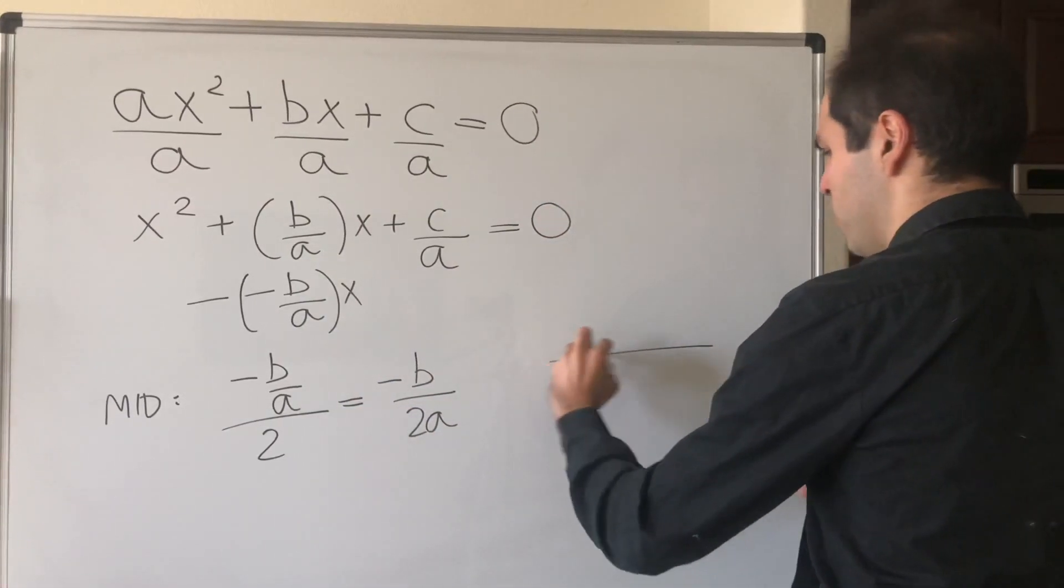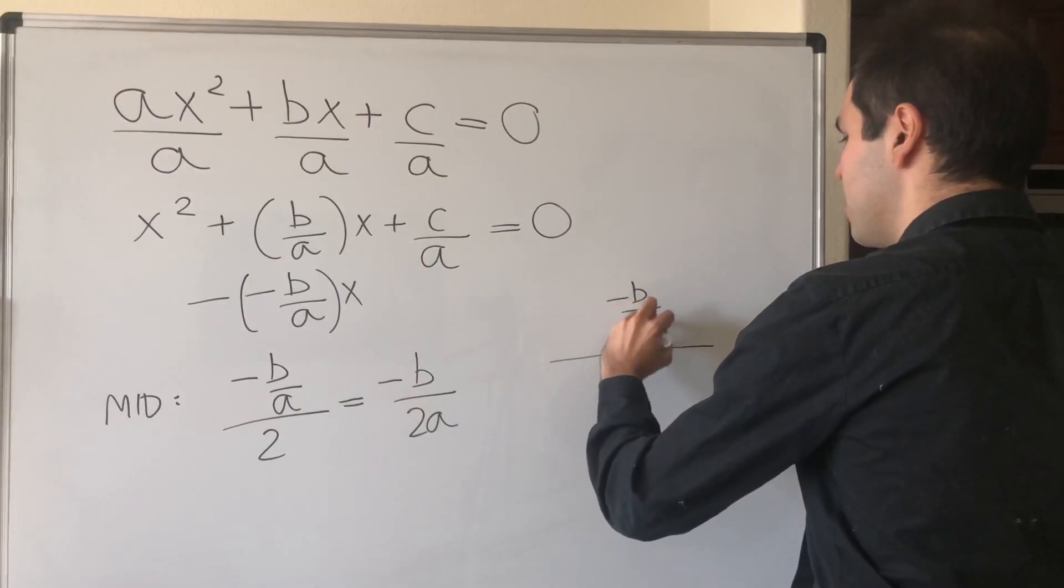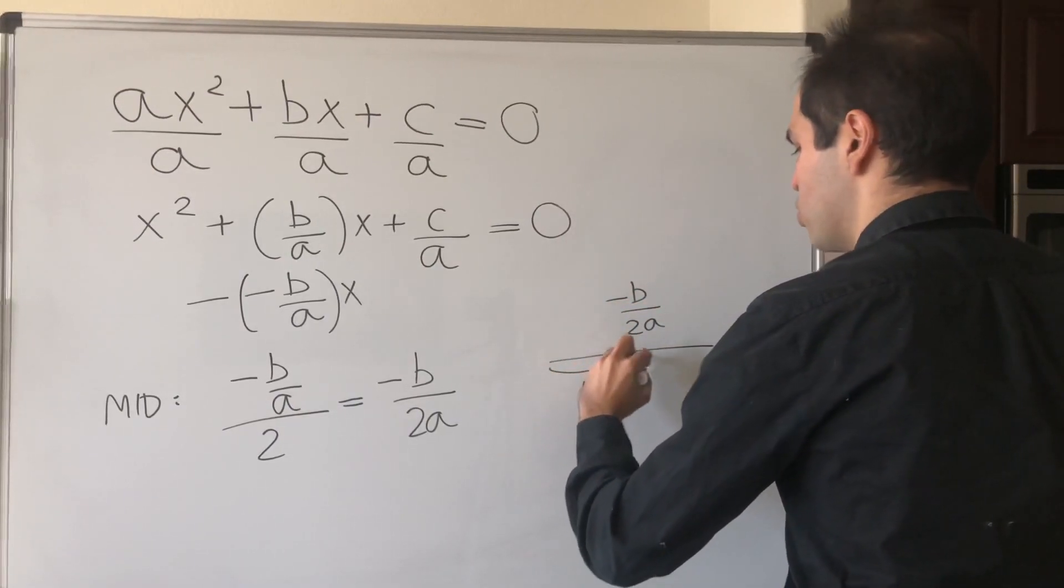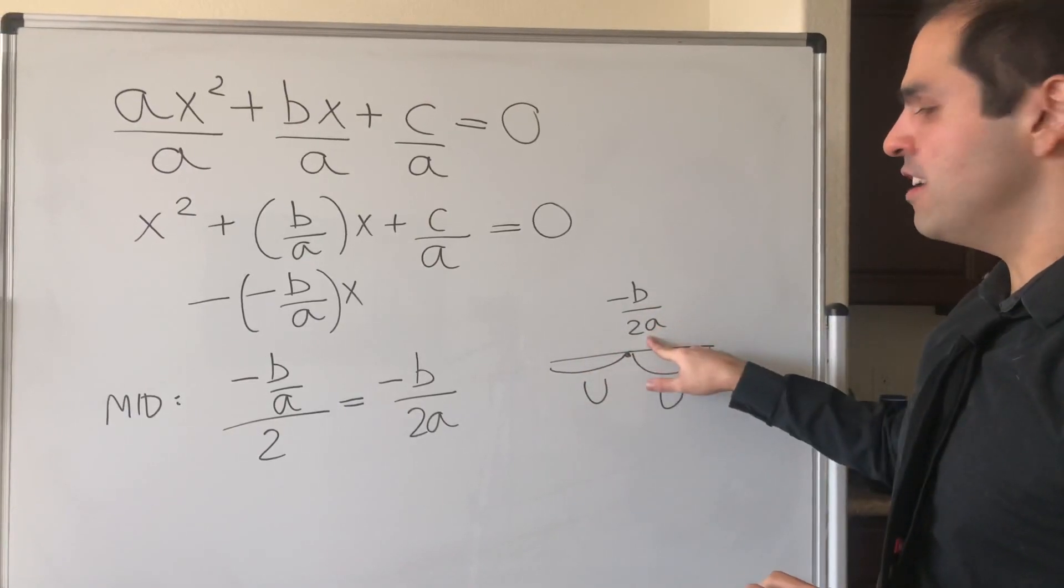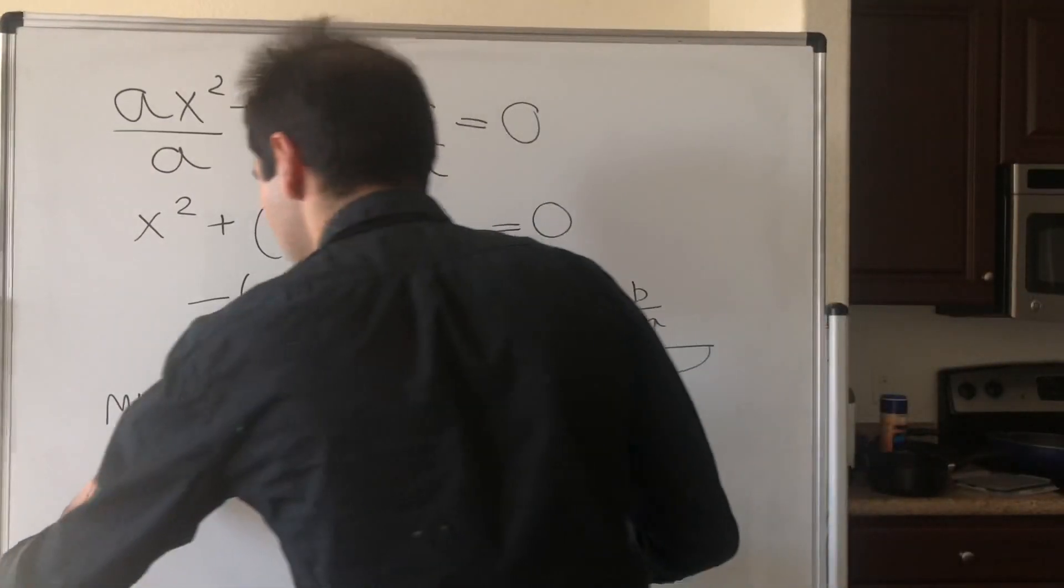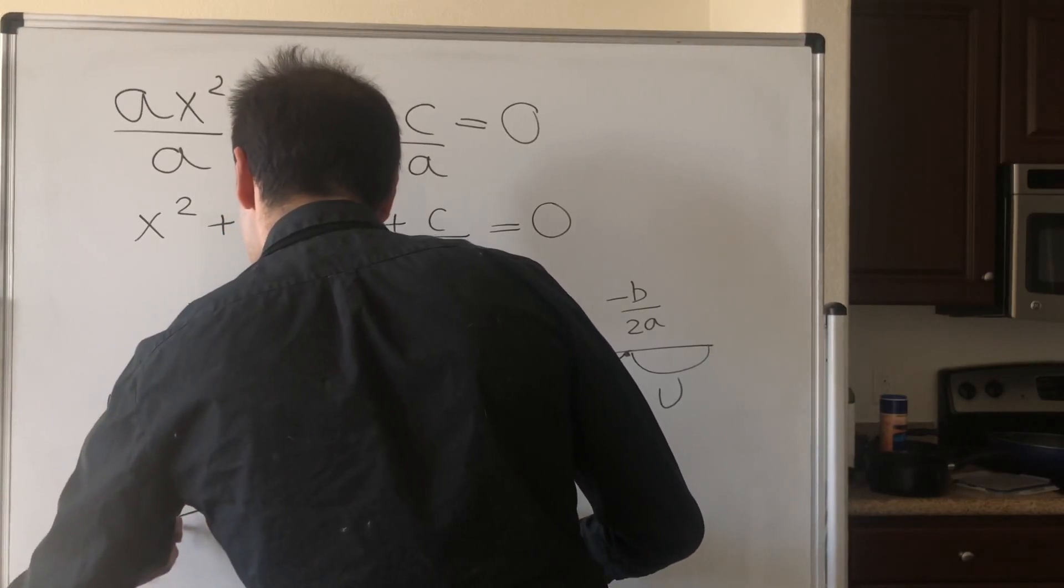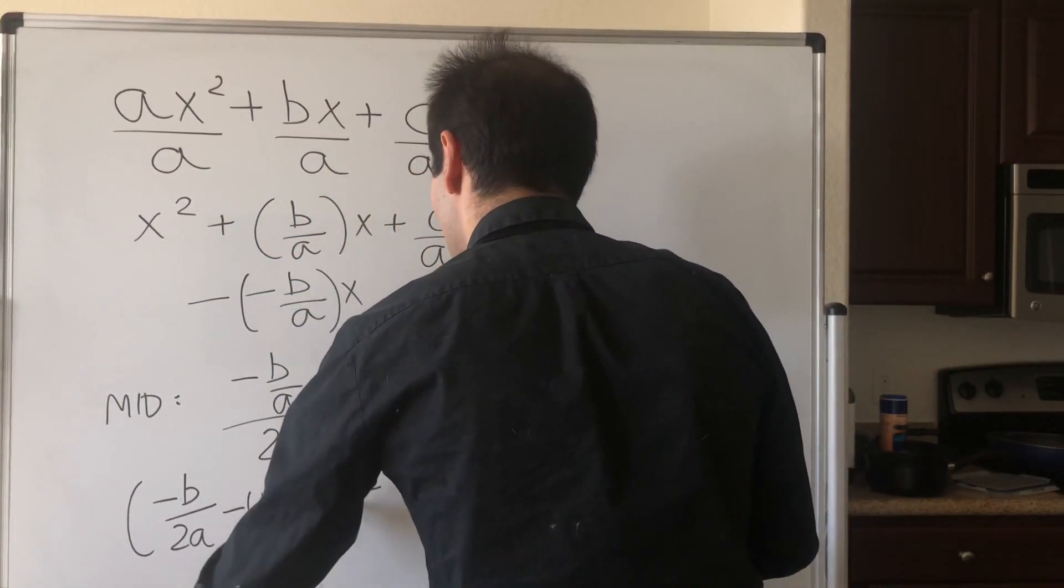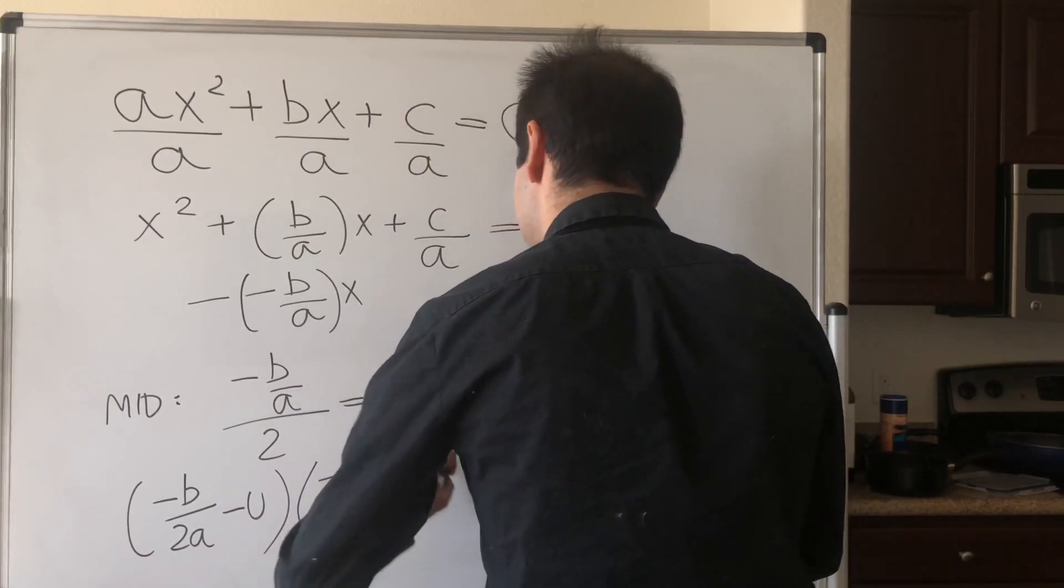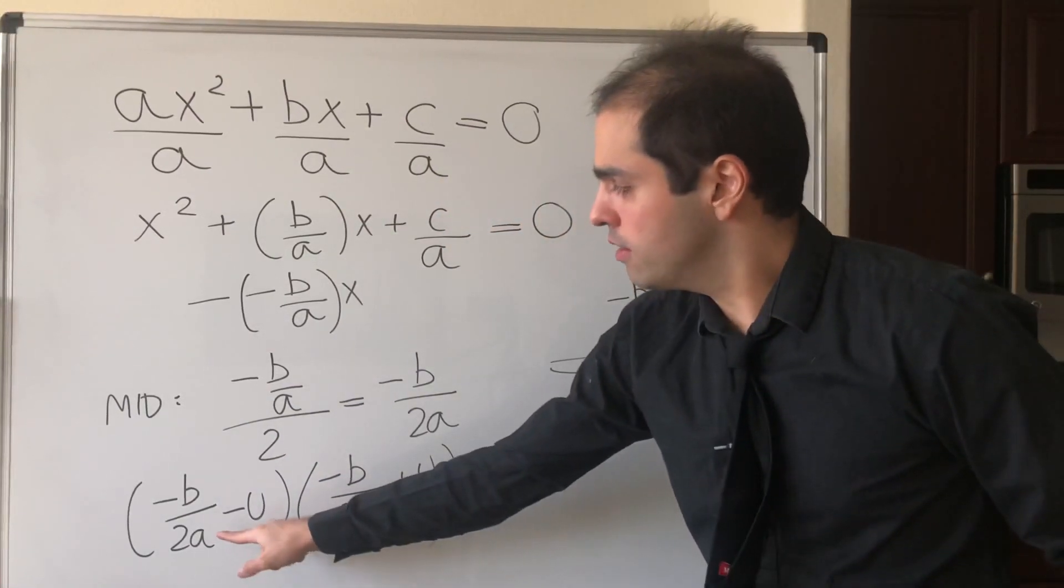So the midpoint is -b/2a. If the distance is u, this tells us one root is -b/2a - u, and the other root is -b/2a + u.